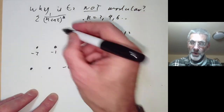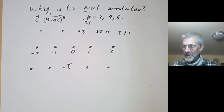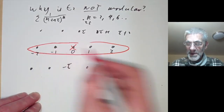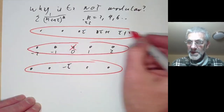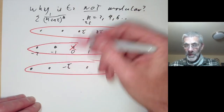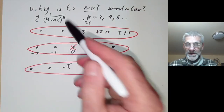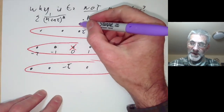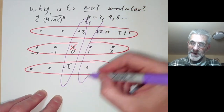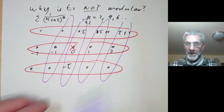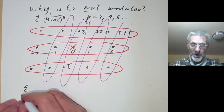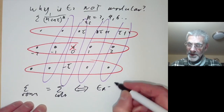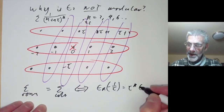To work out the Fourier expansion, we summed over the rows and then summed all the rows together, which gives the Fourier series for Ek. To prove the functional equation — that it's a modular form — we sum over the columns first and add up those sums. The sum over rows equalling the sum over columns corresponds to the fact that Ek(−1/τ) equals τ to the k times Ek(τ).